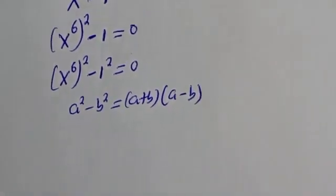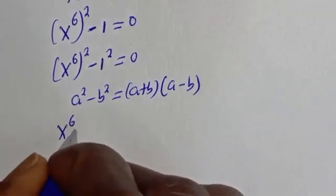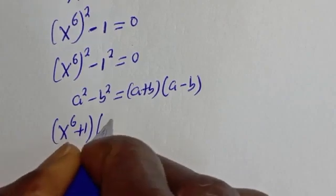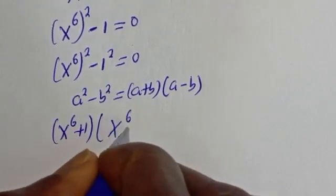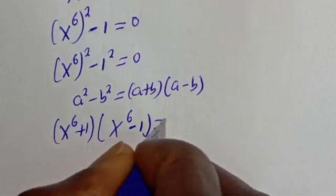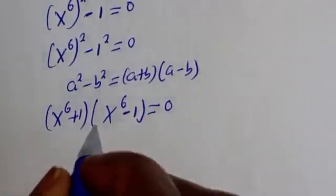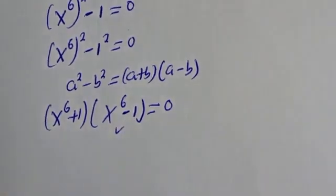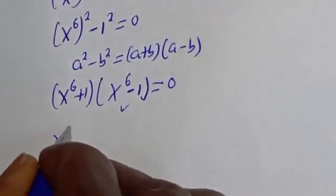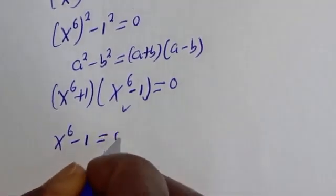Substituting, we get s raised to power 6 plus 1, bracket s raised to power 6 minus 1, is equal to 0. So we can still express this as s raised to power 6 minus 1 is equal to 0.